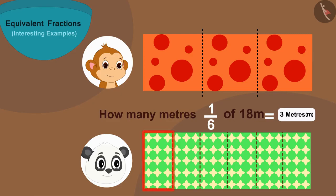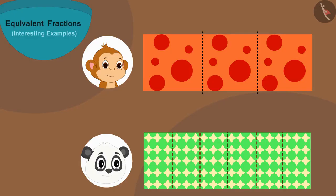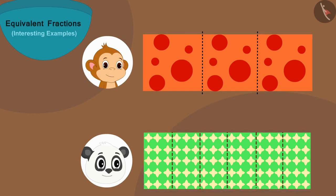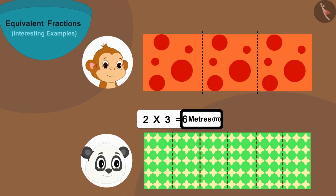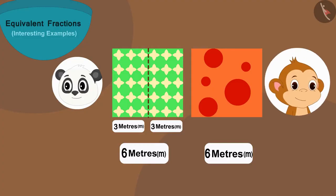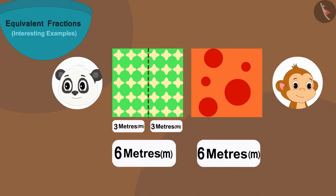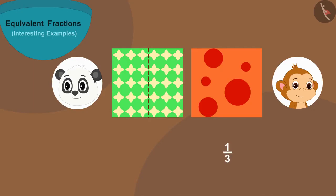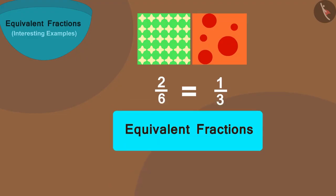Three meters. But Golu has given two-sixth part to Babban — that is two parts out of six. In this way Golu has given Babban two times three, or six meters long cloth. So you see children, Golu has given Babban an equal length of cloth. One-third of Babban's cloth is equal to two-sixths of Golu's cloth. Therefore these fractions are equivalent fractions.